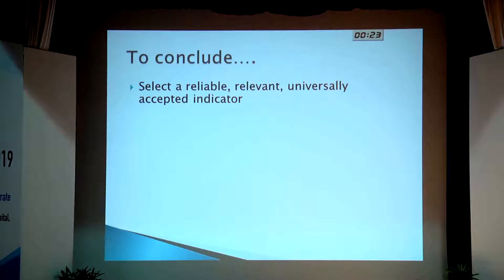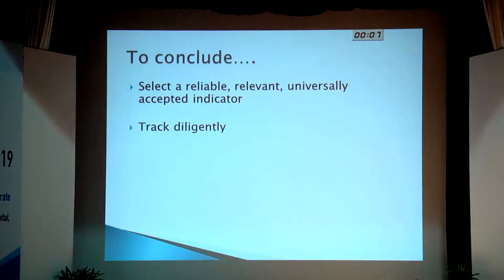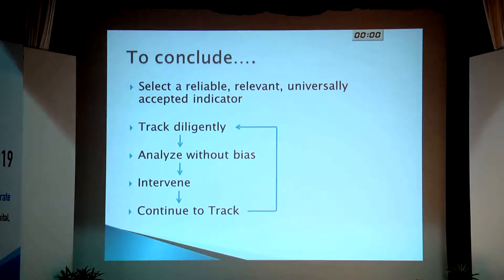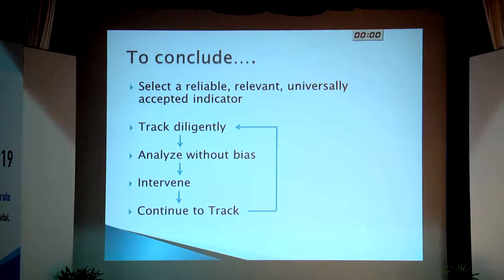To conclude, the use of surgical quality indicators is a fantastic tool in improving quality. But you need to select a good indicator that's relevant, universally accepted, and useful. You need to track it diligently and honestly, analyze it without bias — and it's good to have an external group do the analysis for us. You need to intervene and continue to track, and that completes the cycle. If we continue this seemingly boring process, those of us who've done large volumes of surgical work will be able to vouch that this certainly improves the outcome of surgical care much more than a brilliantly performed operation will. Thank you all for your patient listening.